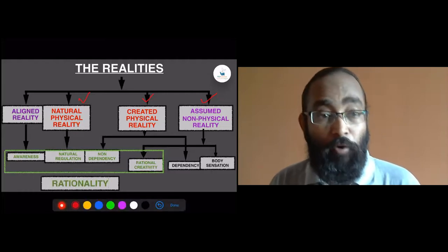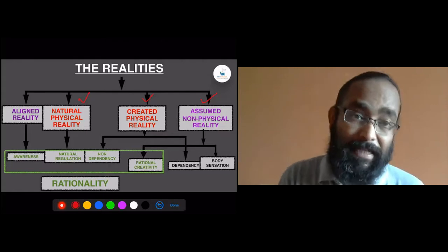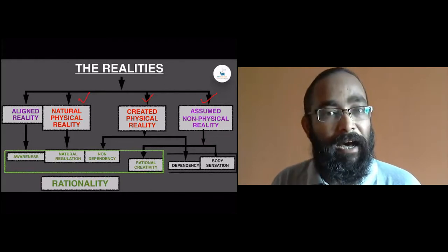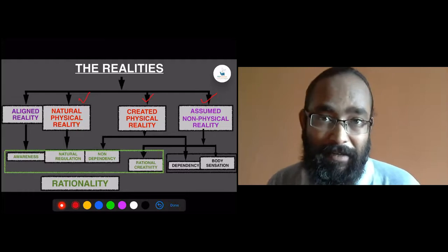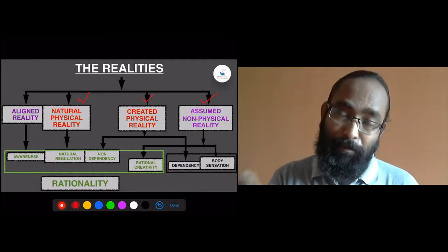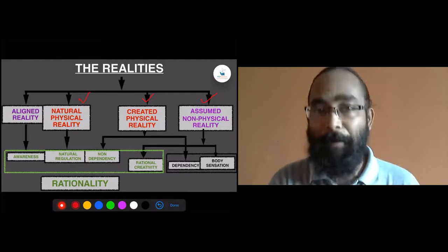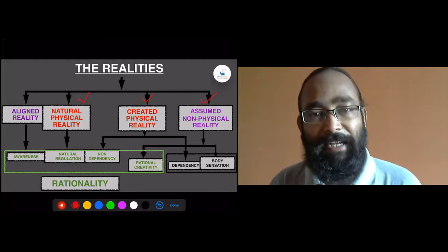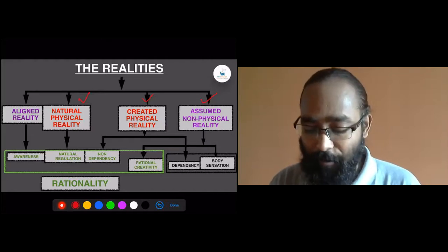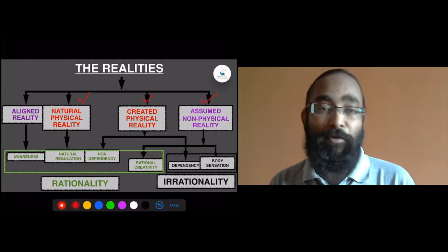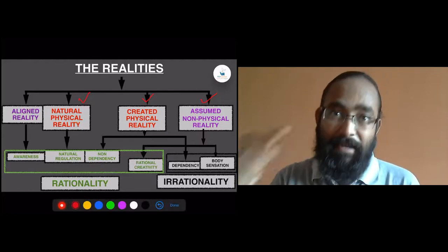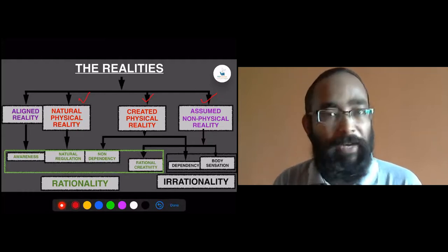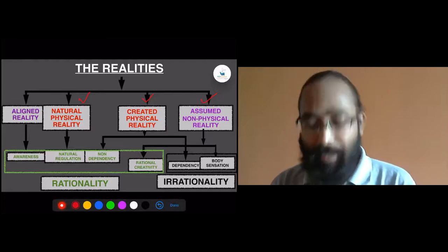Rationality relies in these four aspects: awareness, natural regulation, non-dependent created physical reality, and rational creativity from the assumed non-physical reality. Irrationality is when we are dependent on the created physical reality — when the thought persists that the created reality is inseparable to my life, that leads to irrational formation of mind. And when the assumed reality creates body sensation, it becomes a loop, which is a big toll on vitality and the formation of the mind. These two are the irrational aspects.